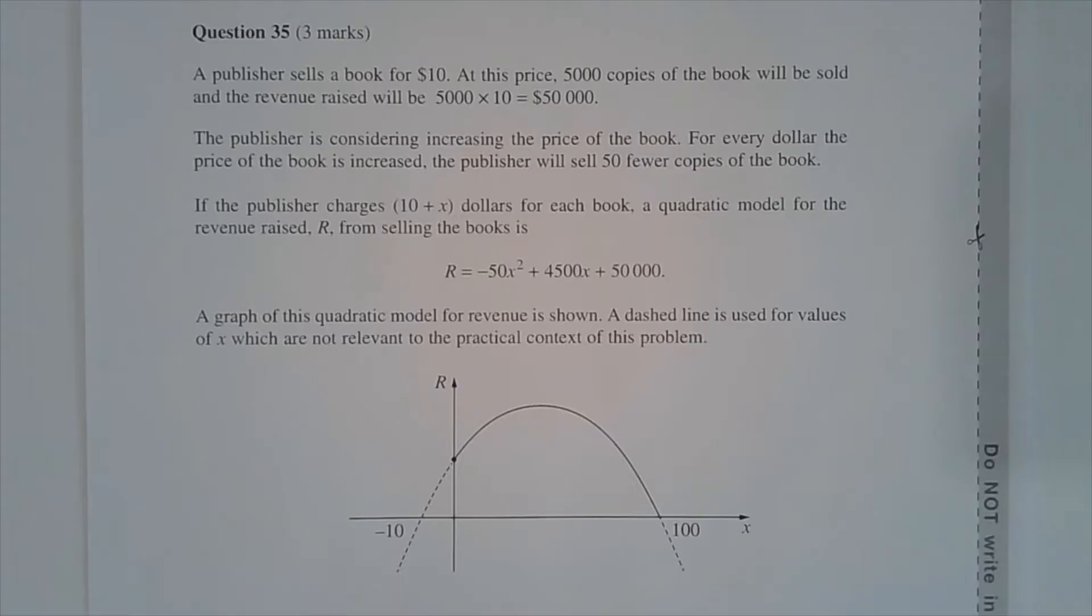Question 35. A publisher sells a book for $10. At this price, 5,000 copies of the book will be sold and the revenue raised will be 5,000 multiplied by 10 equals $50,000.